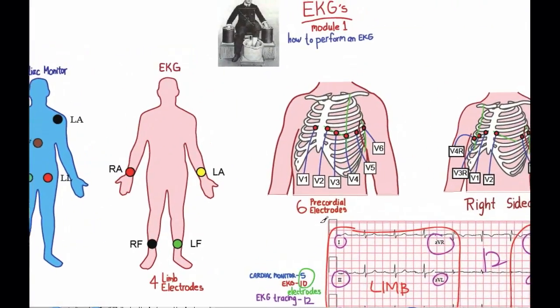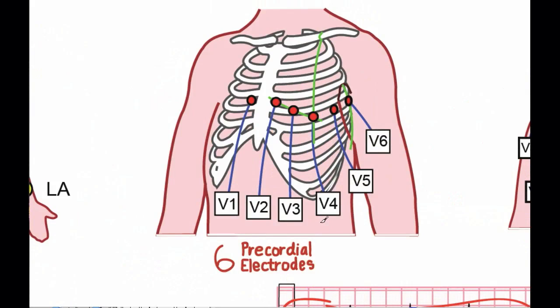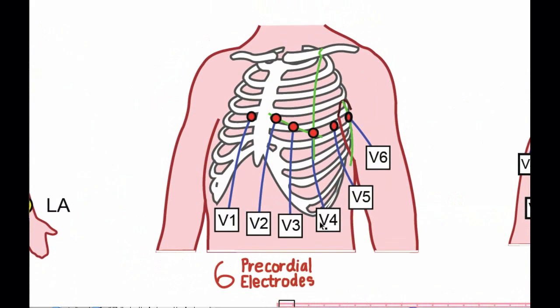There are also six precordial electrodes. V1 goes in the fourth intercostal space between ribs 4 and 5, just to the right of the sternum. V2 goes in the fourth intercostal space, but just to the left of the sternum. V4 goes in the fifth intercostal space in the midclavicular line. V3 goes in a line in between both V3 and V4, right in the middle.